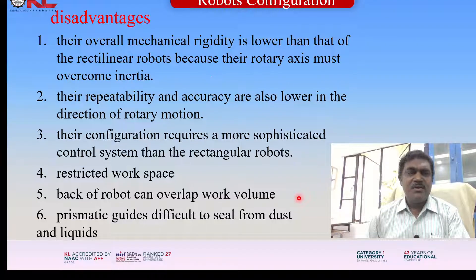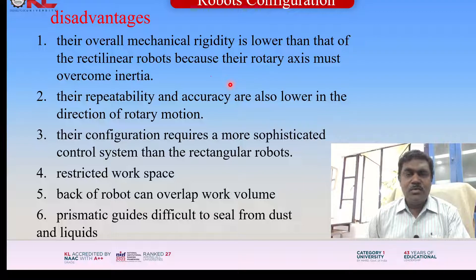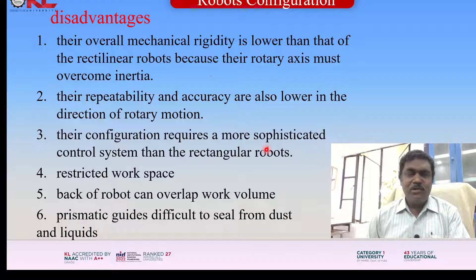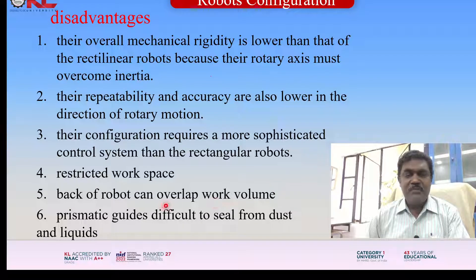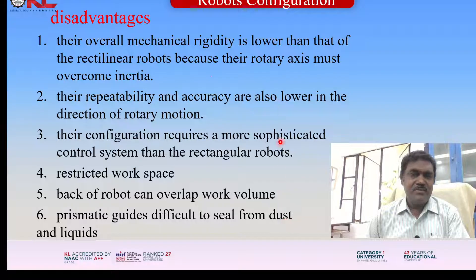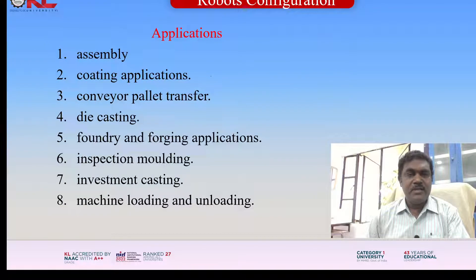What are the disadvantages? Their overall mechanical rigidity is lower than that of rectangular robots because their rotary axis must overcome the inertia. Their repeatability and accuracy are also lower in the direction of rotary motion. Their configuration requires a more sophisticated control system than rectangular robots. Other disadvantages include restricted workspace, the back of the robot can overlap work volume, prismatic guides are difficult to seal from dust and liquid.